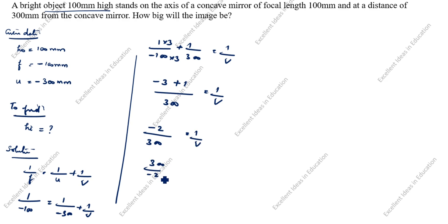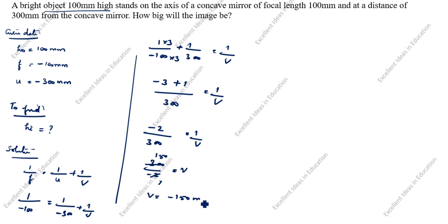Minus 3 plus 1 is minus 2, divided by 300 is equal to 1 by V. So 300 divided by minus 2 is equal to V. 300 divided by 2 is 150, so V is equal to minus 150 mm.